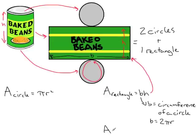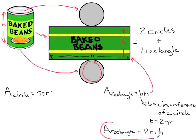So the area of the rectangle in terms of a circle is going to be the base — which we said was equal to the circumference — so it's two times pi times the radius, times the height of the rectangle. If we then take the formula for the area of the rectangle and add it to the formula for the area of a circle, we can find the surface area of the cylinder.